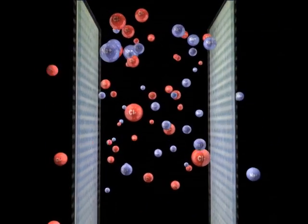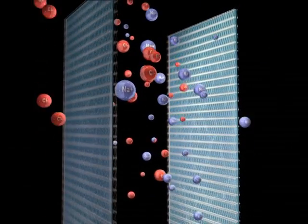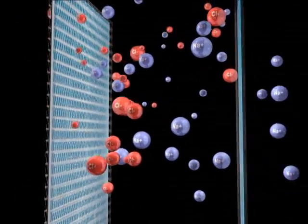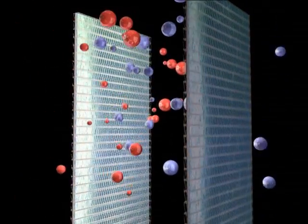salt ions permeate through these membranes from salt water to fresh water. Negatively charged chlorine to the left and, at the same time, positively charged sodium to the right.